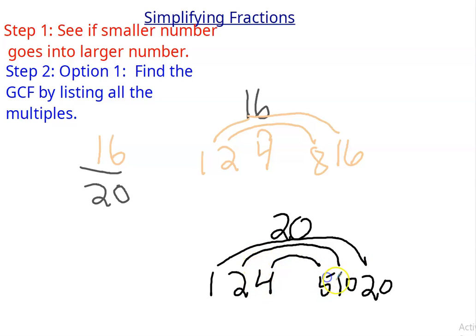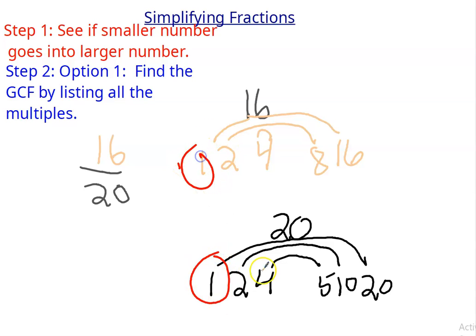And since I reached the 5, I know I'm done. So what I'm going to do now is circle all my common factors. I'll go down to 20. Is there a 1 here? Yes, there is. So I'll circle the 1s. Is there a 2 in both? Yes. Is there a 4 in both? Yes.